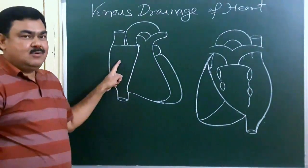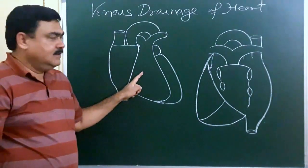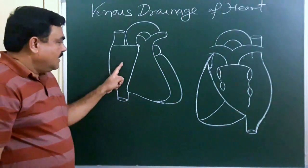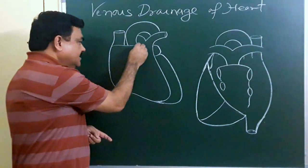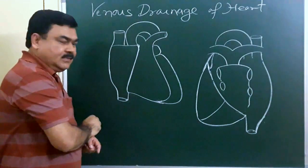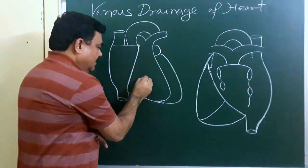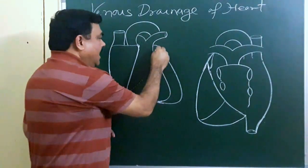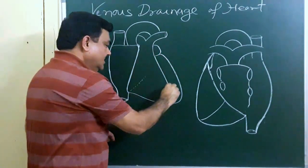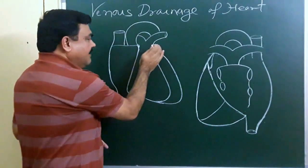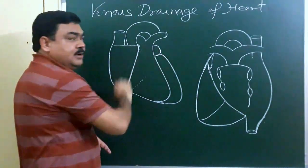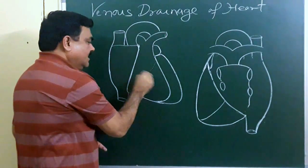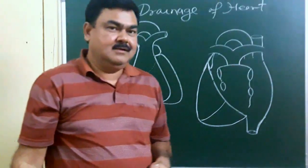In this diagram, you can see this is the right atrium, right ventricle, there is the left auricle, and there is the left ventricle. Here is the right atrioventricular groove, this is the right atrioventricular groove, and the posterior atrioventricular groove. Here is the anterior interventricular groove, and here is the left atrioventricular groove — anterior and posterior left atrioventricular groove.